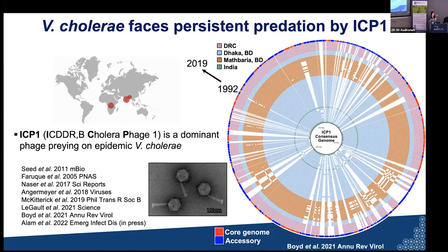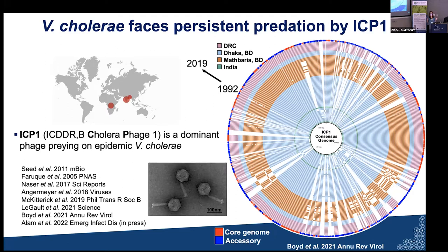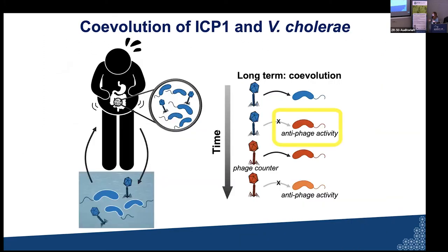There's a huge core genome here that's highly conserved, encoding things we can predict function for — DNA replication machinery, structural proteins. There's also a large swath of genes where some phages have them and others don't. What we're coming to realize is that these variable components of the phage genome represent counter-adaptations to changing and fluctuating defense systems in Vibrio cholerae. These phages don't retain counter-defense inhibitors unless they're confronting those defenses. Some defenses are stagnant in the genome, but epidemic strains do fluctuate their defense systems, so we can use this collection of phages along with these Vibrio strains to study co-evolution of what has happened in nature.